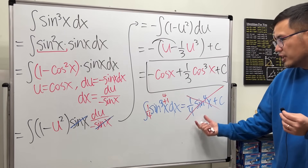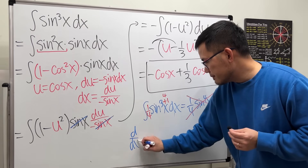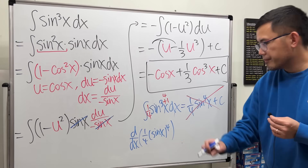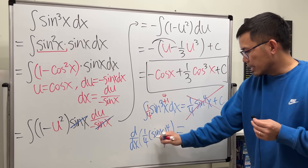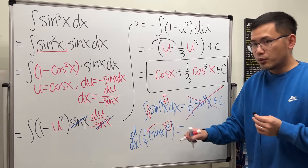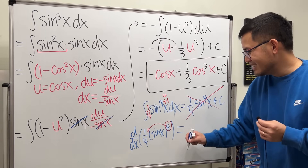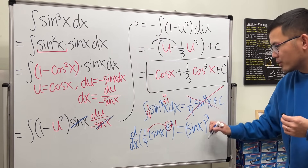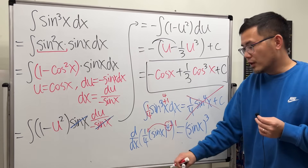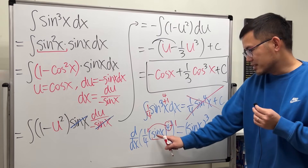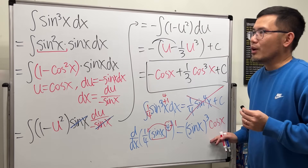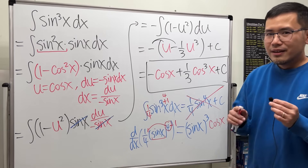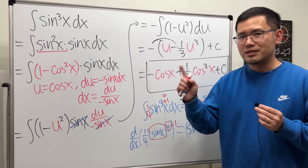Why? Because if you differentiate one over four sine to the fourth power x, you must use the chain rule. The power rule brings down four and reduces to sine cubed x, but the chain rule also gives the derivative of sine x, which is cosine x. Since we did not originally have a cosine x factor, this confirms the answer is wrong. For more integration practice, check out the ultimate integral starter video.